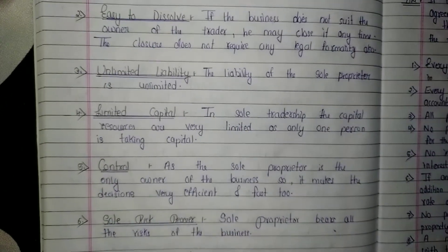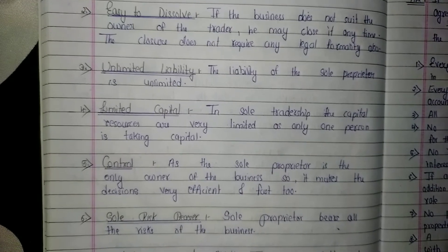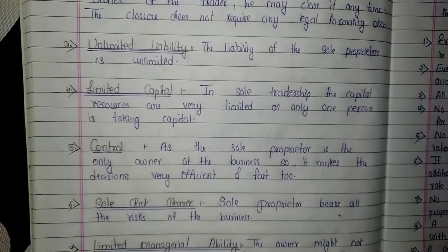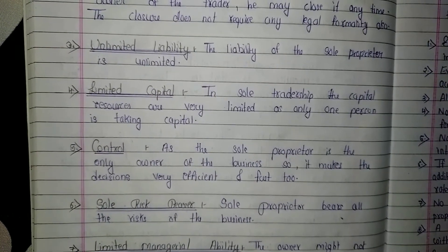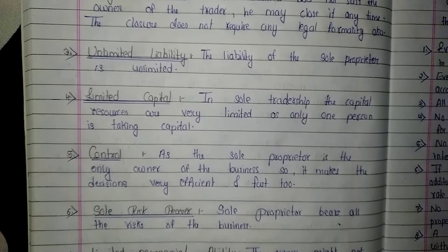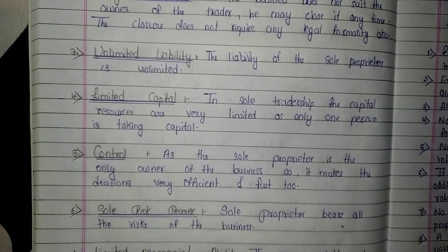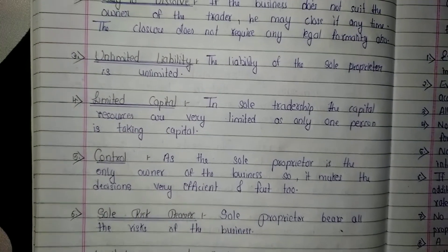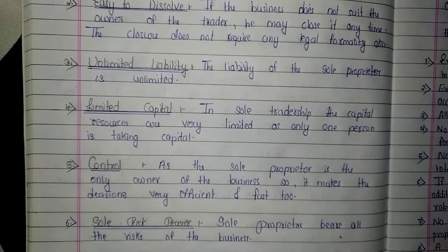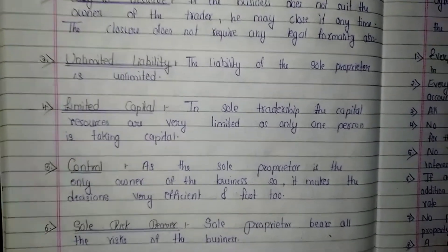The third characteristic is unlimited liability — the liability of the sole proprietor is unlimited. The fourth characteristic is limited capital. In a sole tradership, capital resources are very limited as only one person is providing the capital.